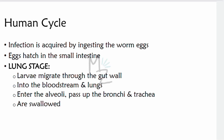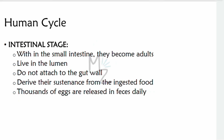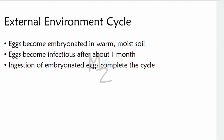Then the second phase of the intestinal stage begins. The intestinal stage has two phases: the first before the lung stage, and the second after the lung stage when the larvae are swallowed back. Within the small intestine the larvae become adults, living in the lumen without attaching to the gut wall, deriving sustenance from ingested food. Thousands of eggs are released in feces daily. After eggs reach the soil, they become embryonated in warm, moist soil, becoming infectious after one month. Ingestion of these embryonated eggs completes the cycle.